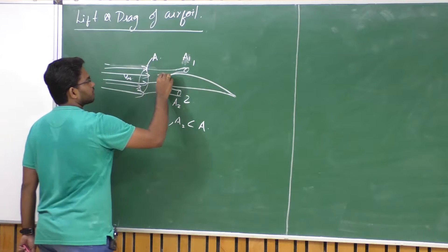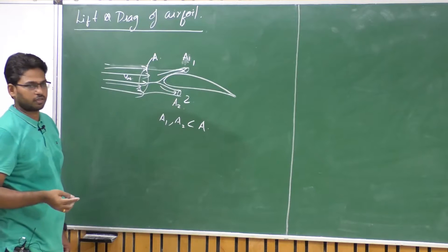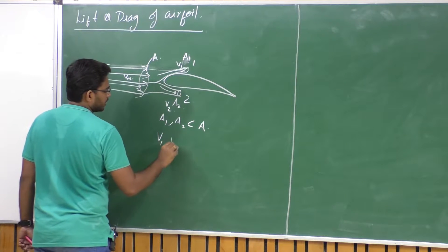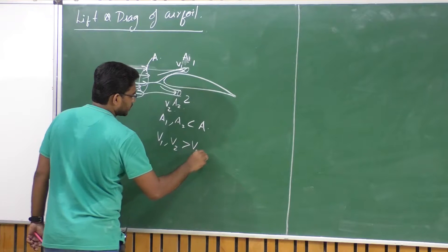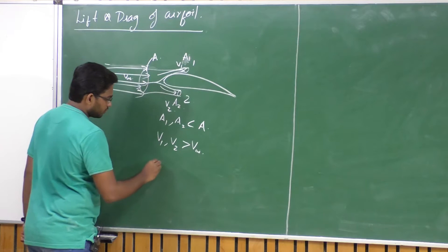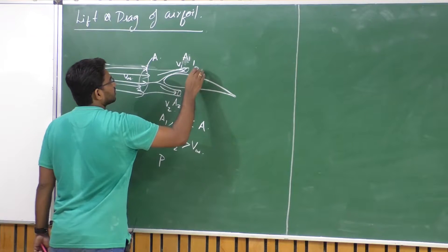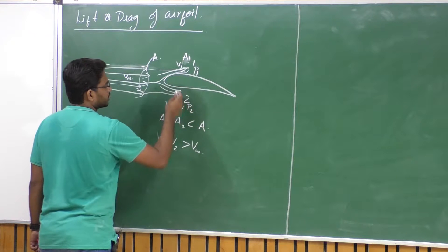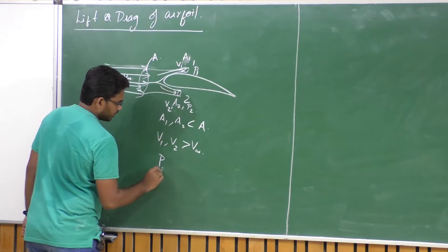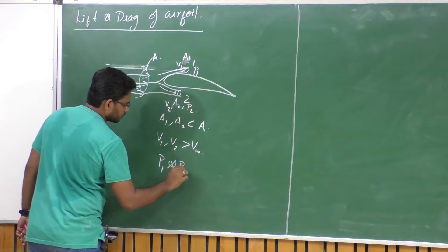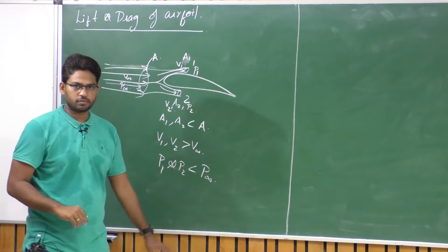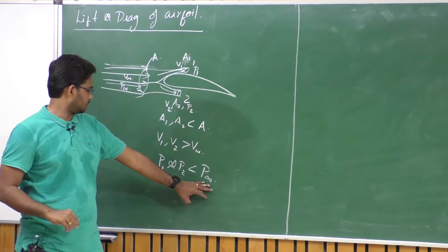Since the area is reduced, the flow tries to accelerate on the top and bottom surfaces. That means we have velocities V1 and V2, and V1 and V2 are greater than V infinity. This results in a drop in pressure according to Bernoulli's theorem. So P1, the pressure at the top surface, and P2, the static pressure on the bottom surface of this airfoil, are both less than P infinity, the static pressure in the free stream.